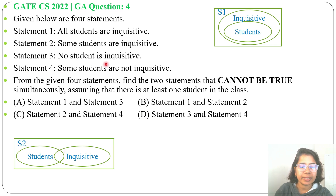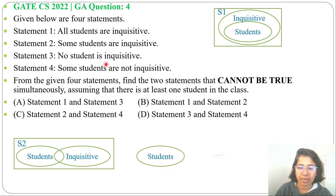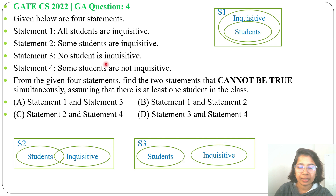Statement 3: No student is inquisitive. If student is one set and inquisitive is another set, then they will be completely separate — there is no intersection between the two sets.